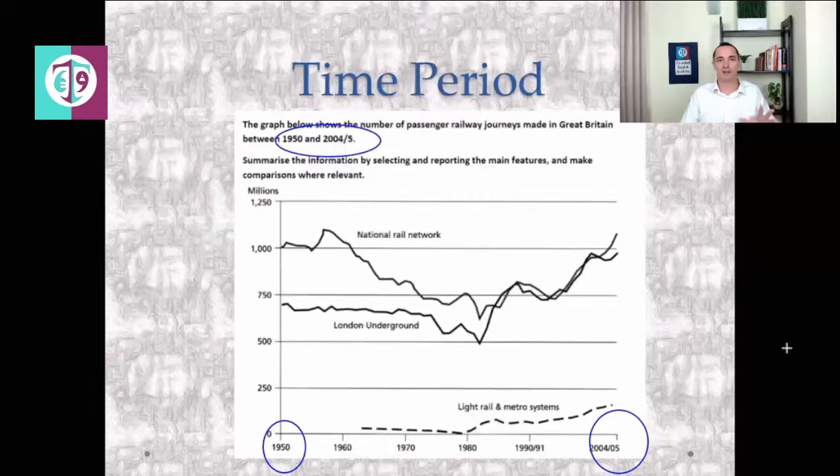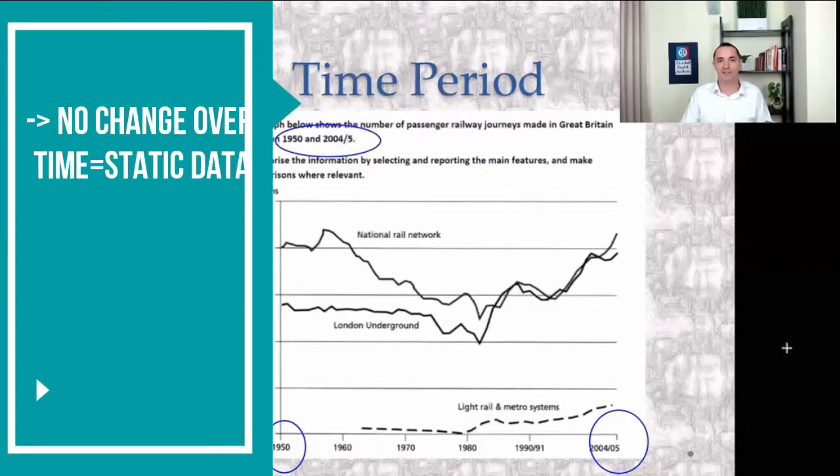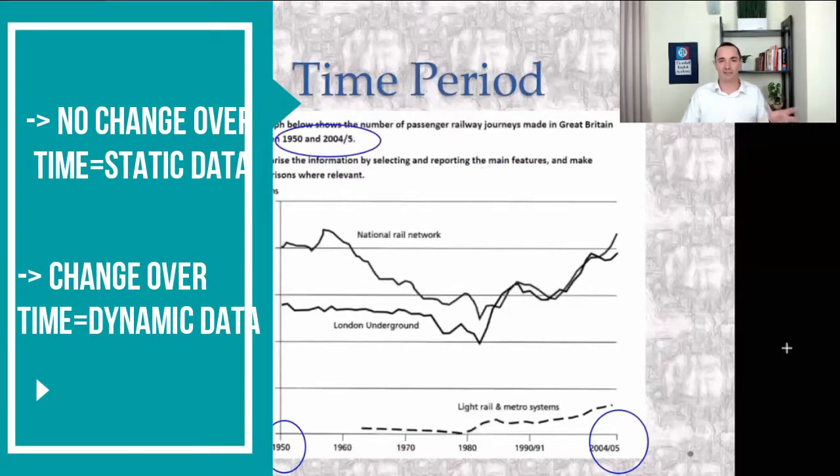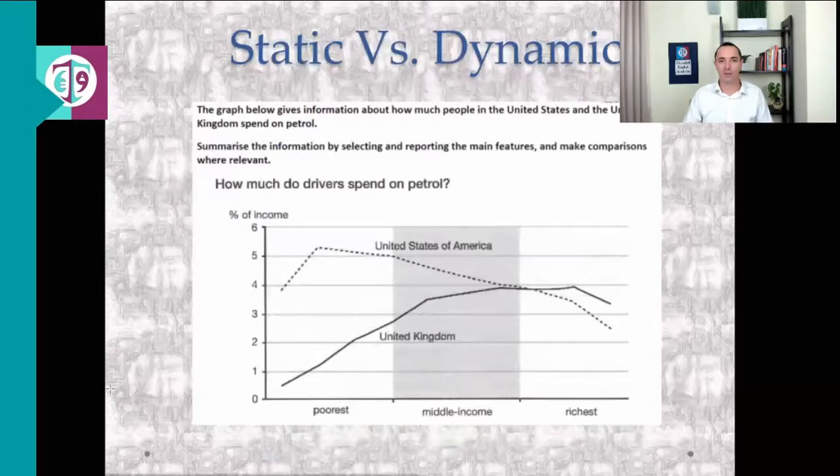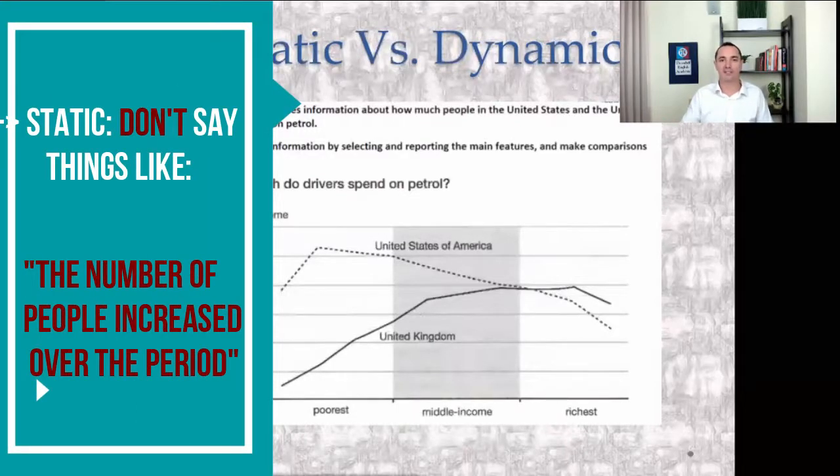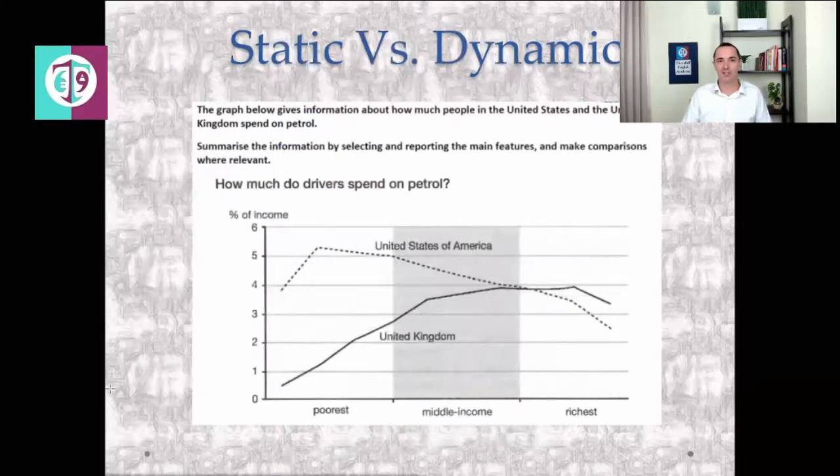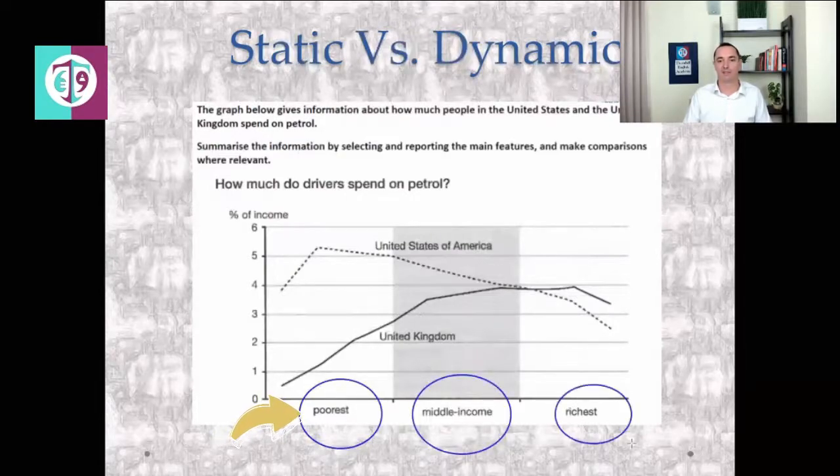When there's no change over time, we call that static data. When the data changes or evolves over time, this is dynamic data. And obviously, these two cases, you're going to need to use different types of verb. Here's an example of static data. This data does not change over time. So if you use verbs like grew, increased, decreased, declined, you have to be very careful. The data isn't changing over time. Each part of the graph is showing a different section of the population: poorest, middle income, and richest. So be careful again about that.